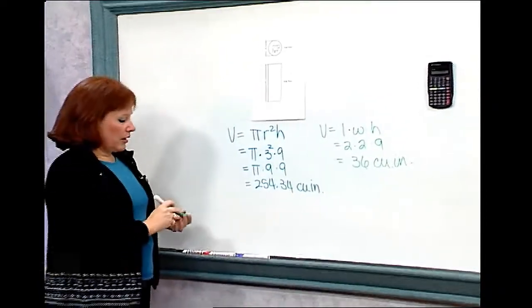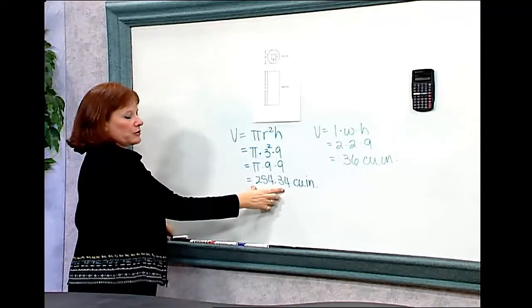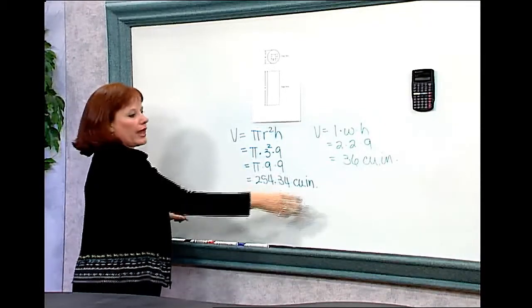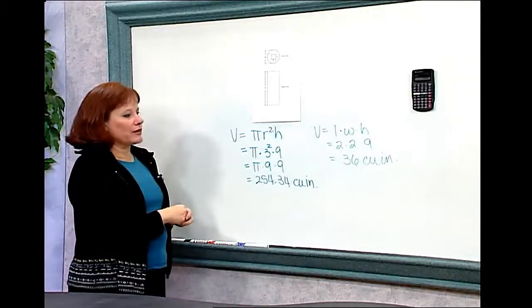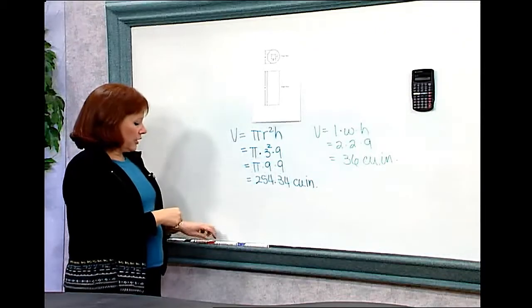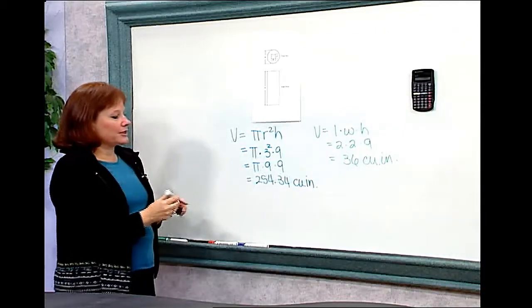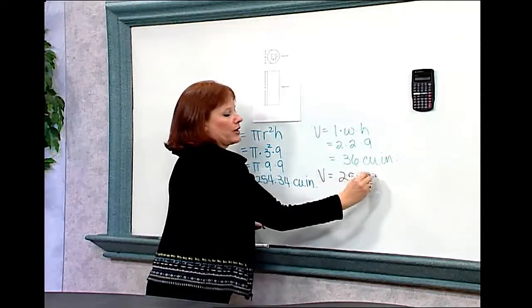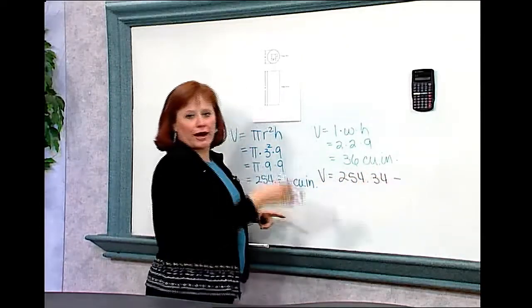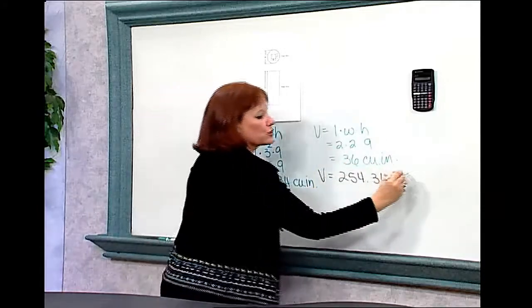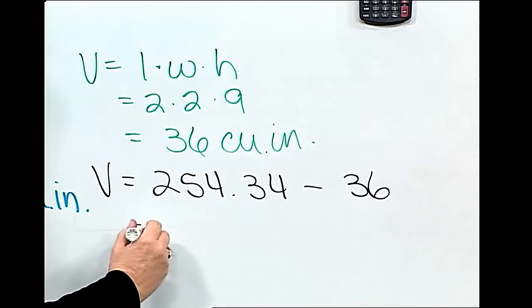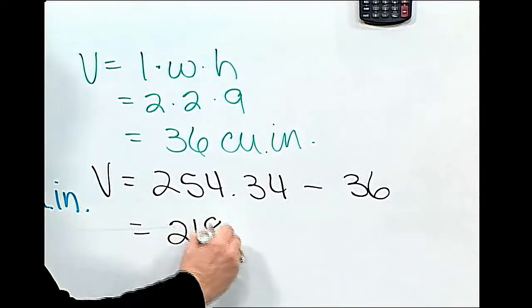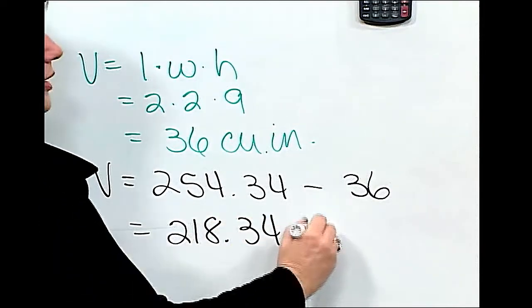Now, I know the volume of the big cylinder. It's 254.34. And I know the volume of the empty space on the inside. It's 36. So the final step in this problem is to take the volume of the cylinder, 254.34, and subtract the volume of the hole, which turned out to be 36, which equals 218.34 cubic inches.